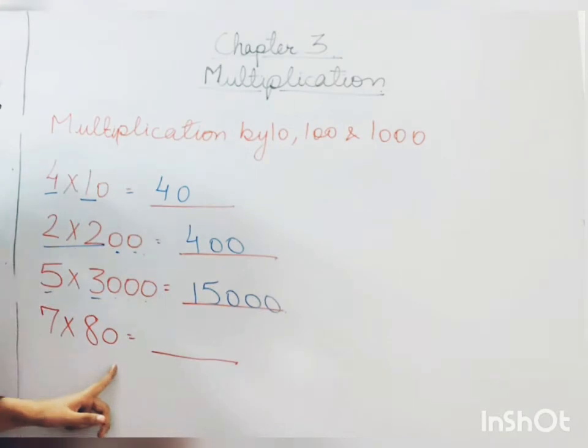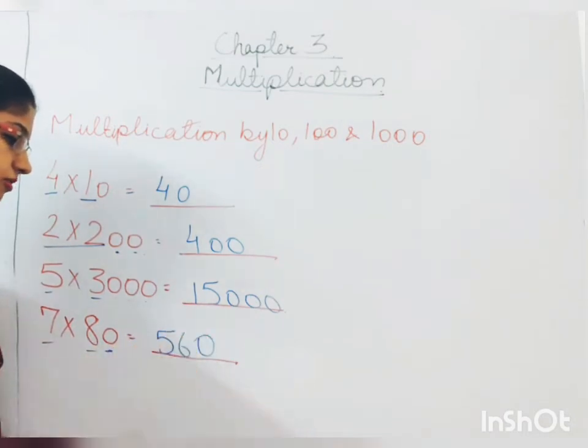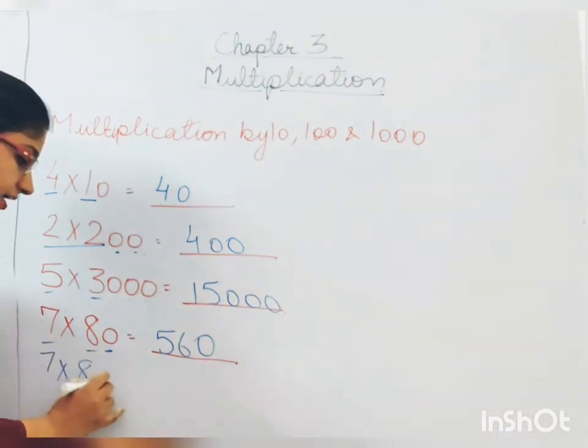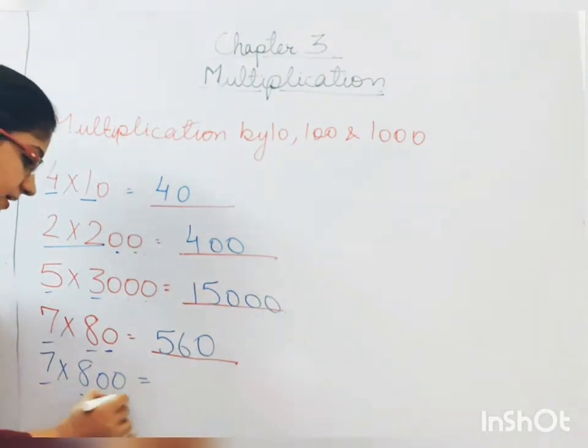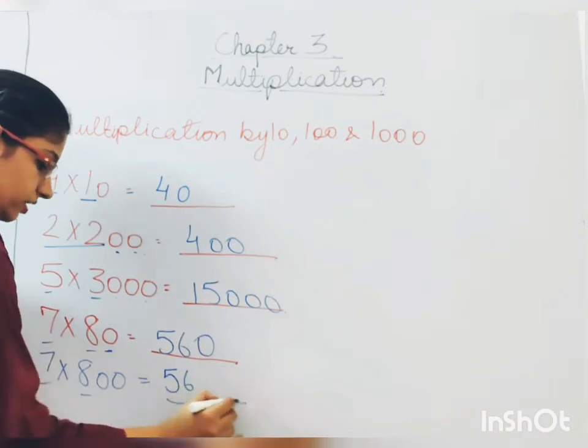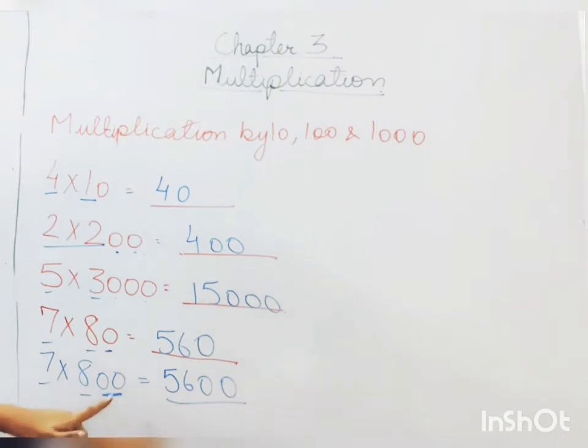Next, 7 multiplied by 80. 7 multiplied by 8 will be 56. And there is one 0 here, so you will add up here. So this will be 560. Now for example, if it was 7 multiplied by 800, what could we do? We will write 7 multiplied by 8 is equal to 56. And now there are 2 0s, so we will add 2 0s behind. So 7 multiplied by 800 will be 5,600.